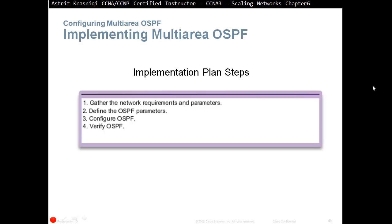Implementing Multi-Area OSPF: implementation plans and steps. First step is to gather the network requirements and parameters. Second step is to define the OSPF parameters. Third step is to configure OSPF, and then we verify OSPF. Remember from the Cisco guidelines that one router should not be in more than three areas, one area should have less than 50 routers, and one router should not have more than 60 neighbors.